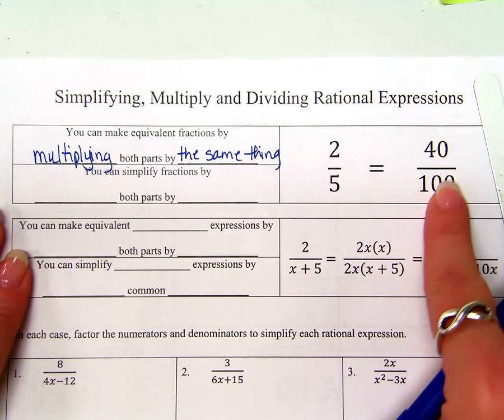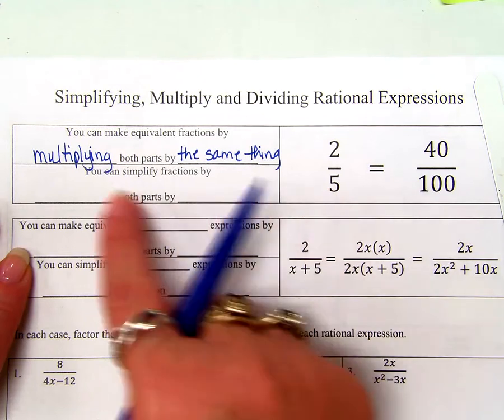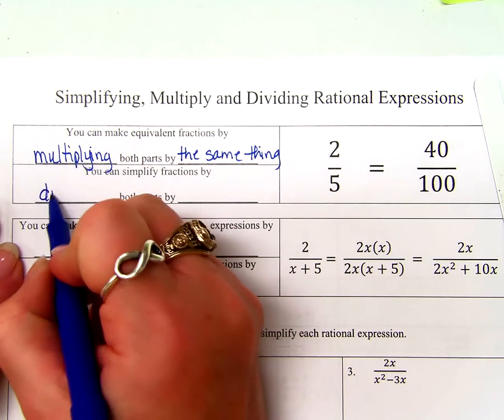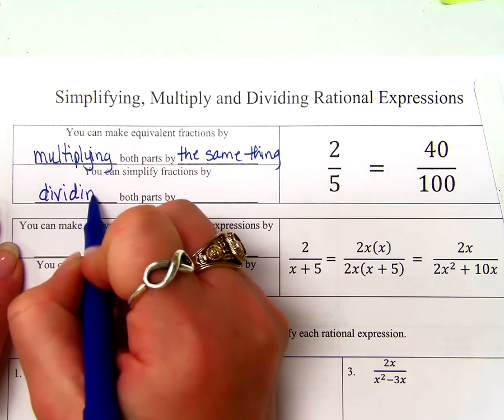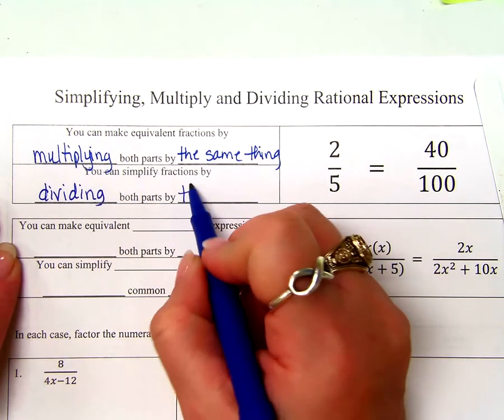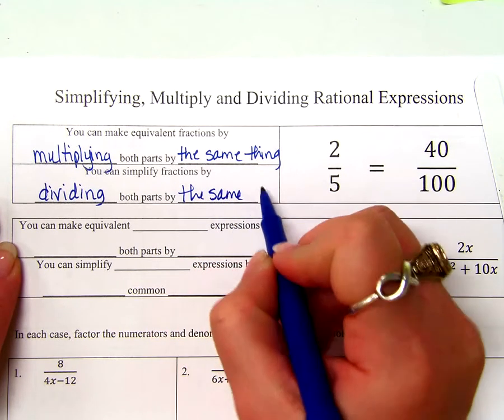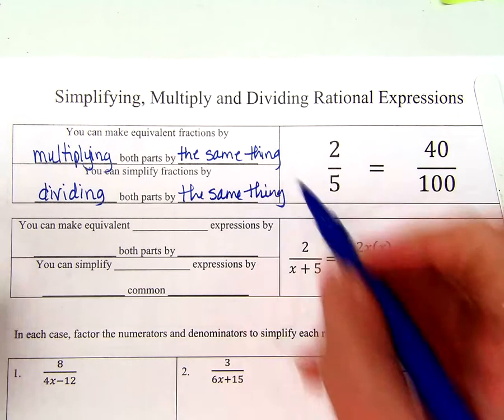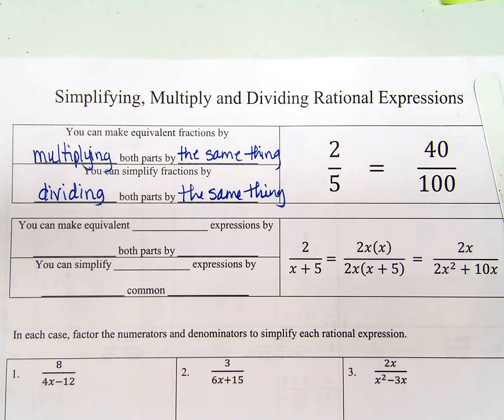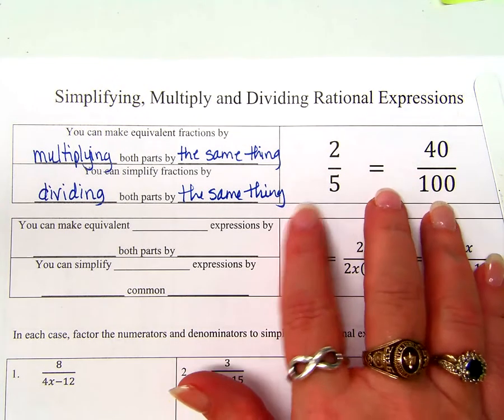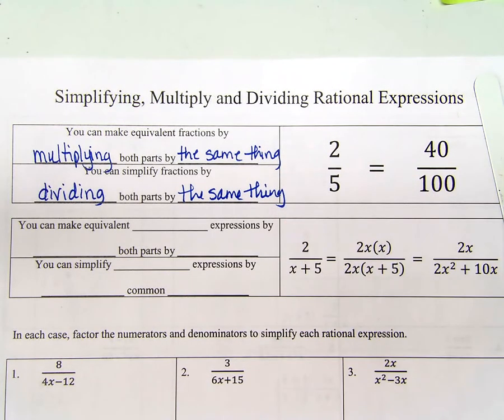Multiplying both parts. And I'm going to be more general. You were very specific for this problem by 20. We're going to say right here, multiplying both parts by the same thing. What do we mean by both parts?